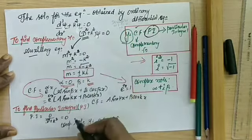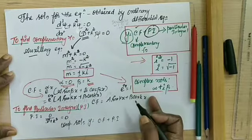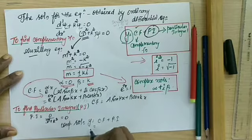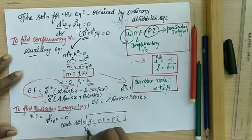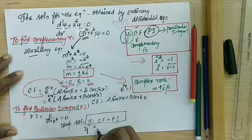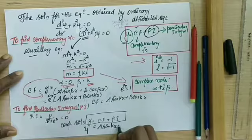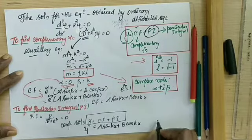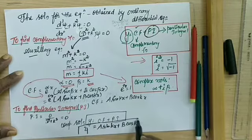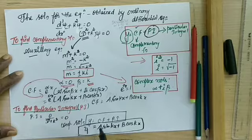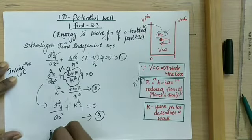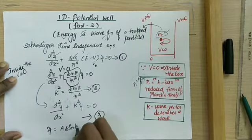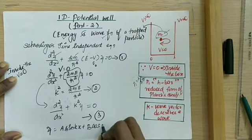Since the right-hand side of the equation is 0, the particular integral is simply taken as 0. The final solution is: y equals complementary function plus particular integral. In our case, psi is equal to A sin kx plus B cos kx plus 0. So this is the solution obtained for the equation d squared psi by dx squared plus k squared psi equal to 0, written as psi equal to A sin kx plus B cos kx.